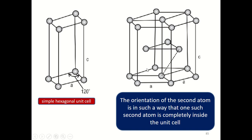Crystal structure means lattice plus basis, where basis represents a group of one or more atoms associated with the lattice point. Here, in order to accommodate two atoms per lattice point, two atoms are associated with the lattice point in the HCP crystal structure. The previous crystal structures — simple cubic, BCC, and FCC — have only one atom associated with the lattice point. In HCP there are two atoms per lattice point, so a second atom is attached to every atom at the lattice point, and its orientation is such that it sits completely inside the unit cell.